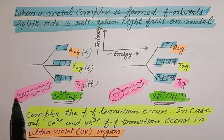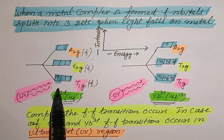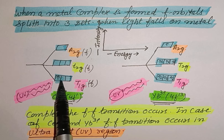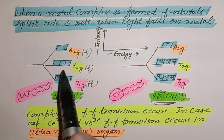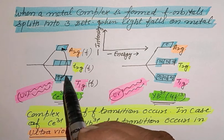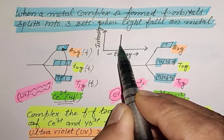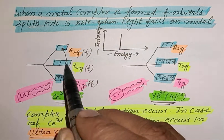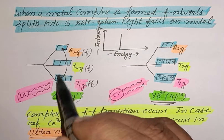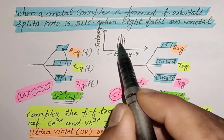When light falls on a transition metal complex or an f-block element complex, the unpaired electron present in the lower energy orbital absorbs a certain amount of energy and transitions from the lower energy orbital to a higher energy orbital. The amount of energy absorbed is shown here. If only one energy is absorbed, it gives one line; if more than one energy is absorbed during this transition, we get more than one line.